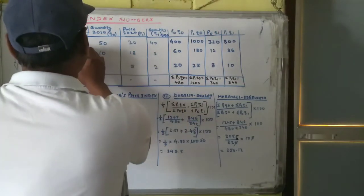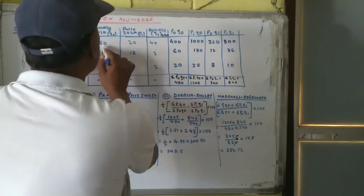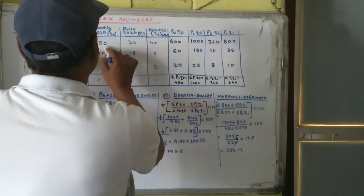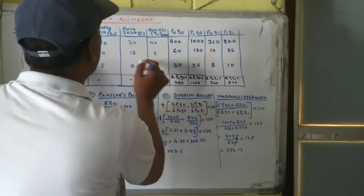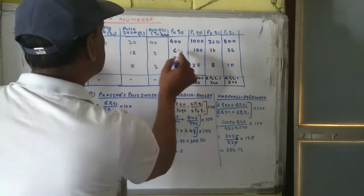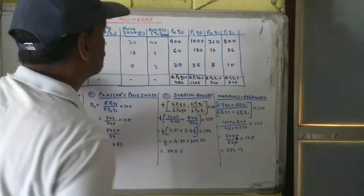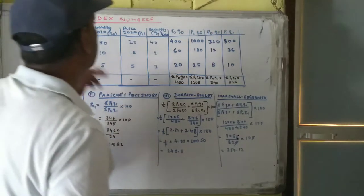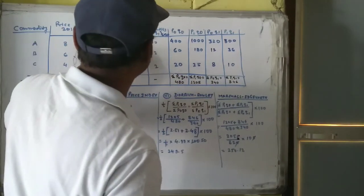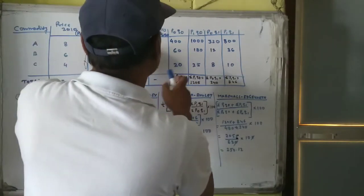Now P0 and Q0. Just see here: 8 into 50 is 400, 6 into 10 is 60, and 4 into 5 is 20. Now the P1 multiplied by Q0. Look here, where is the P1? This is the P1 and this is multiplied by Q0. So 50 into 20...